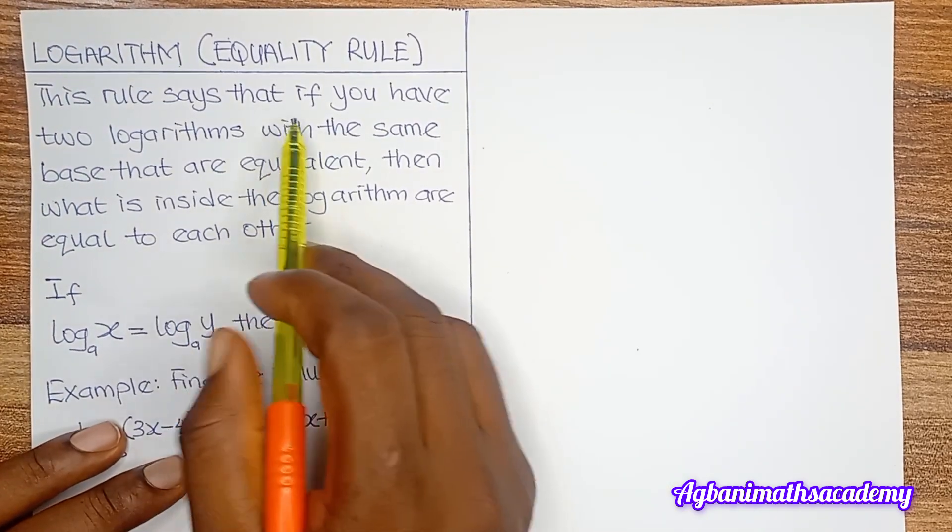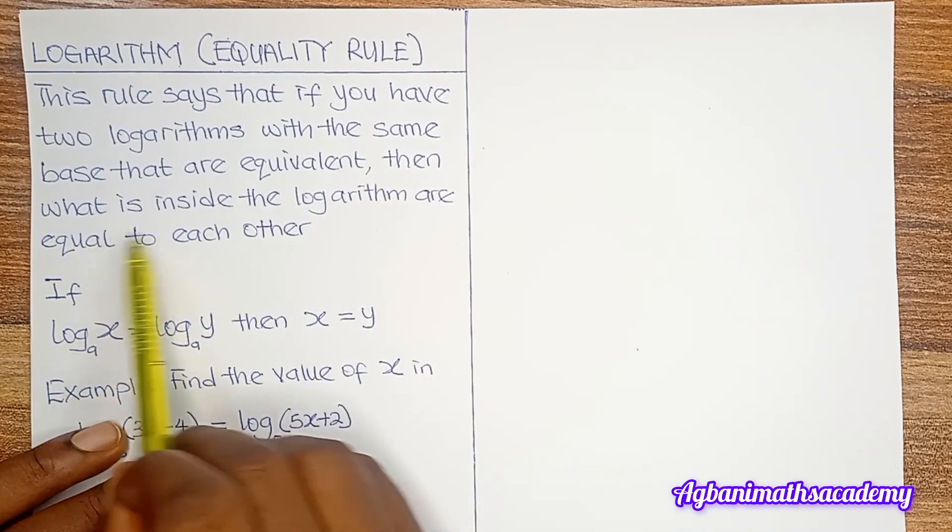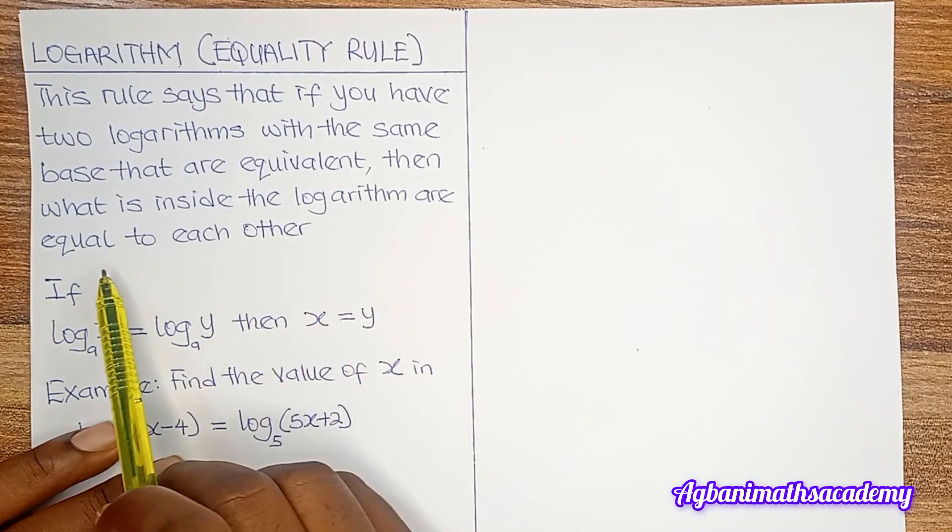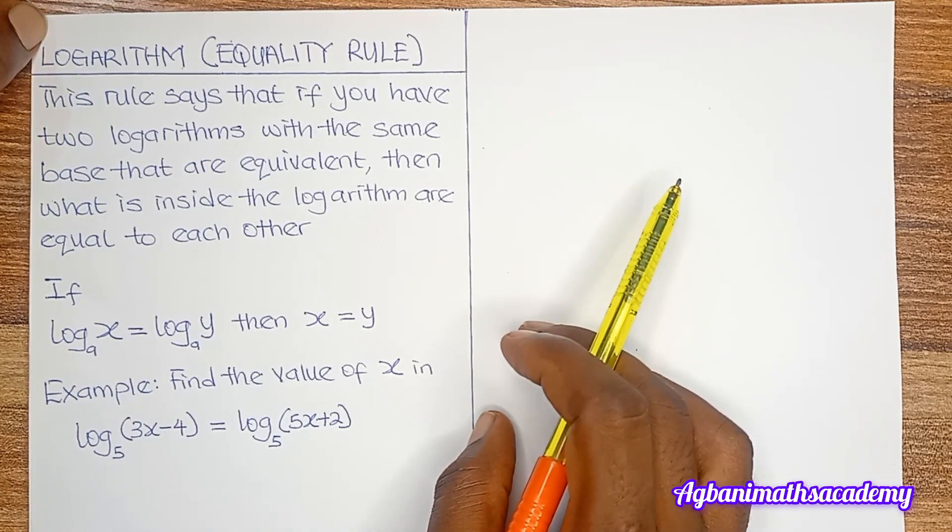This rule says that if you have two logarithms with the same base that are equivalent, then what is inside the logarithm are equal to each other. So this is a very straightforward rule that you can apply to solve logarithmic equations.